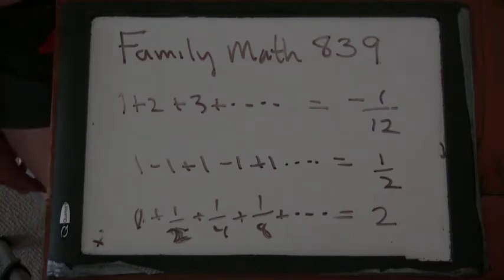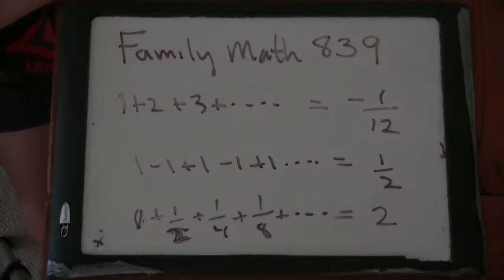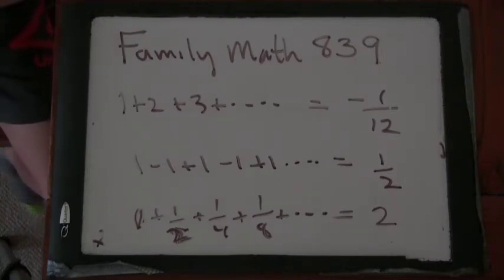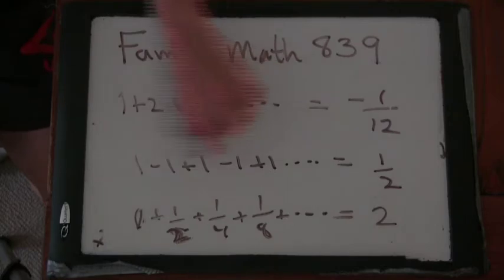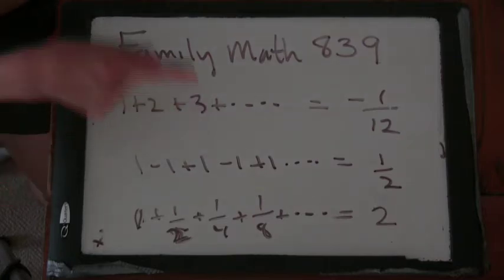Anything else seem strange to you or any place where he was kind of doing stuff where you were like, hmm, I'm not sure, you might be cheating a little bit? Well, when he did the one minus one plus one minus one, it didn't, I mean, you're only adding and subtracting whole numbers and you get a fraction. Yeah. That seems like a problem, too.